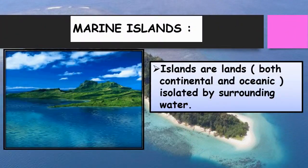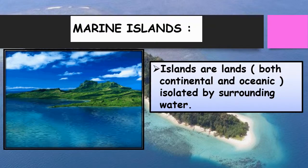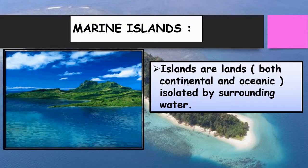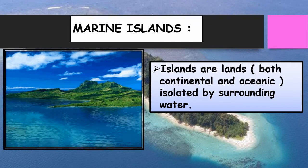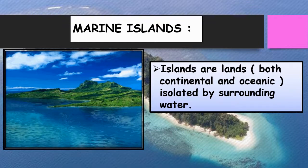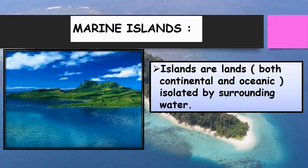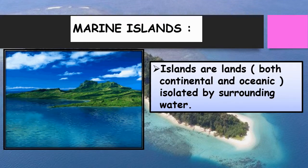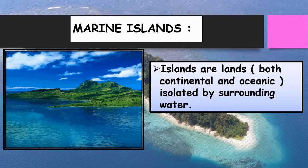Marine islands — 'marine' refers to the world's ocean water, and an island is any piece of land surrounded by water. Islands are isolated land, both continental and oceanic, surrounded by water. So what are marine islands? They are the peaks of some submerged hills that come above the sea level — visible to us and called marine islands.